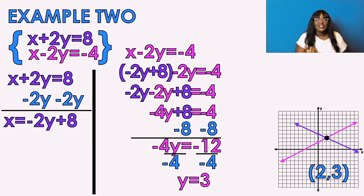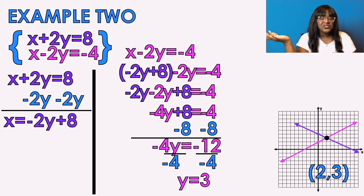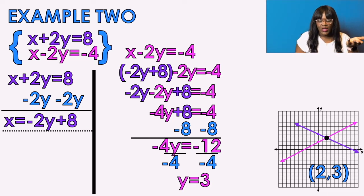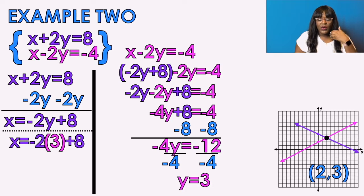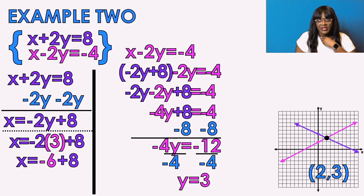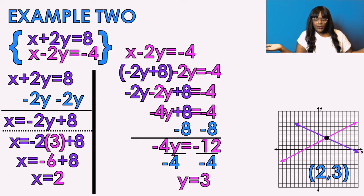Does that match the graph? Yes, it does — so far so good. I know Y equals 3, but how do I find X? I'm going to plug Y into any original equation — the purple one is already on screen. So X equals negative 2 times 3 plus 8: negative 2 times 3 is negative 6, negative 6 plus 8 is 2. We got the answer — X is 2, Y is 3, so the answer is (2, 3).